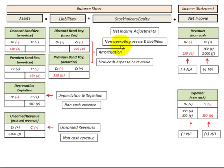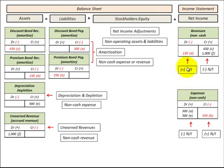We also have to make adjustments for our non-operating assets and liabilities to our net income. Those would include amortization, depreciation, depletion, unearned revenues, and so forth. For revenues as part of net income, any increases would be subtracted from net income and any decreases would be added back. For expenses, any increases would be subtracted from net income and any decreases would be added back.